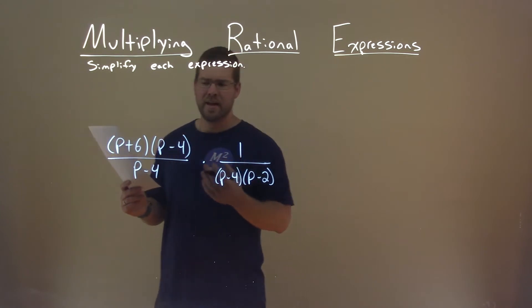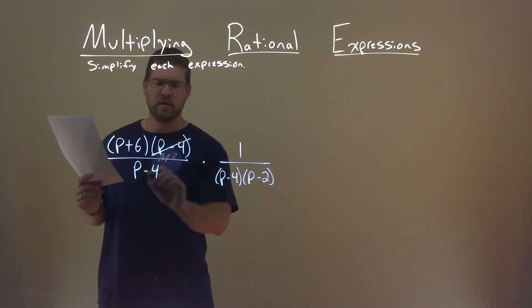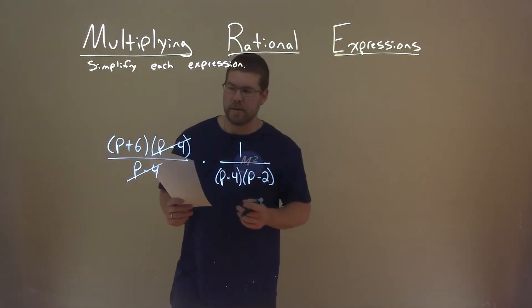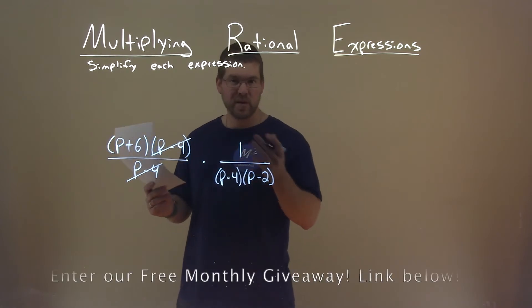So I'm looking for things that I can cancel out for the numerator and the denominator. I see a p minus 4 here and a p minus 4 here - they can cancel out. Nothing else really jumps out that can quickly be eliminated.